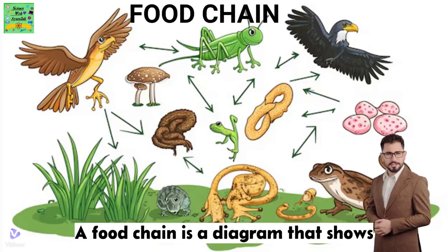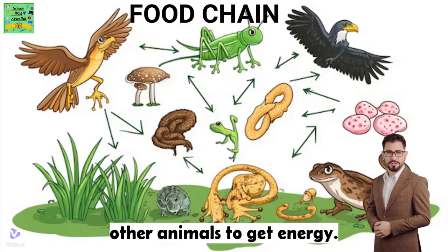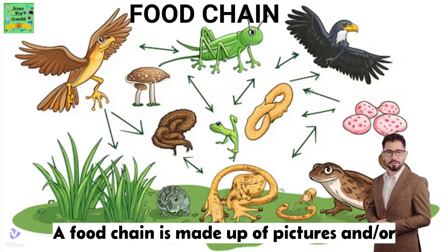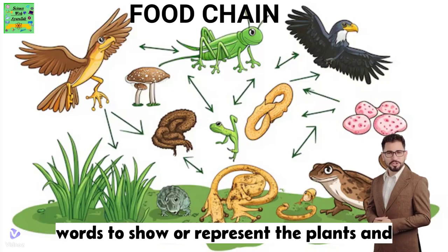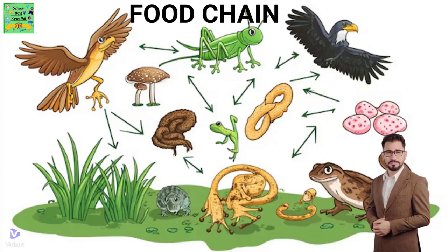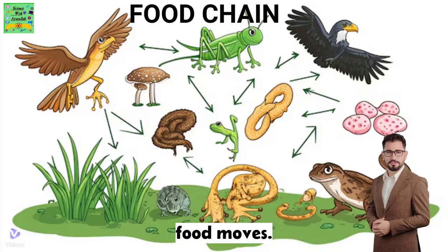A food chain is a diagram that shows the order in which animals eat plants and other animals to get energy. A food chain is made up of pictures and or words to show or represent the plants and animals, with arrows linking them. The arrows show the direction in which the food moves.